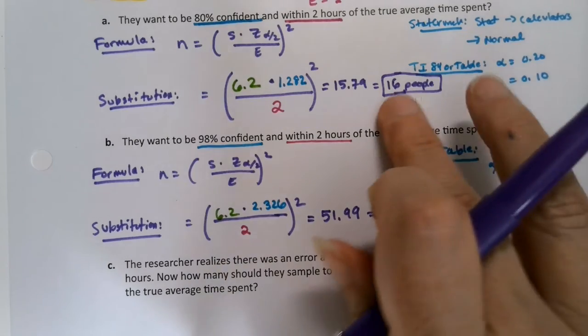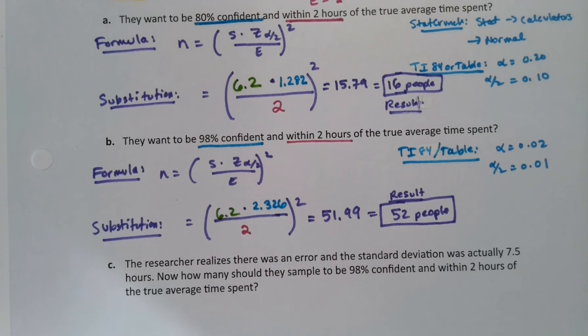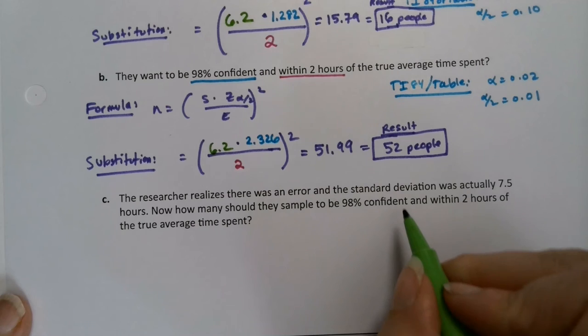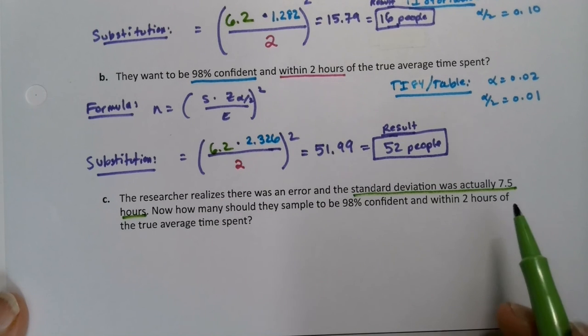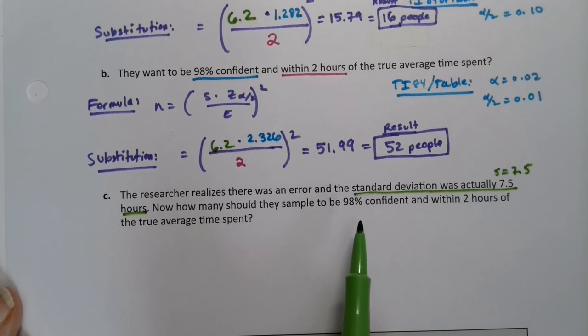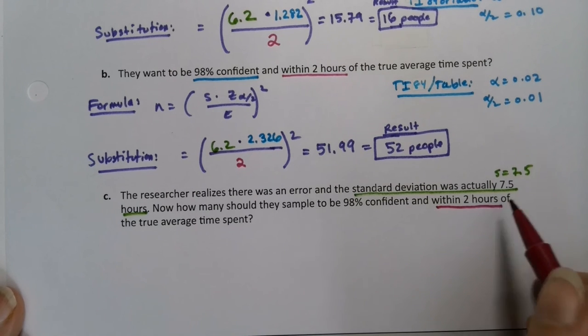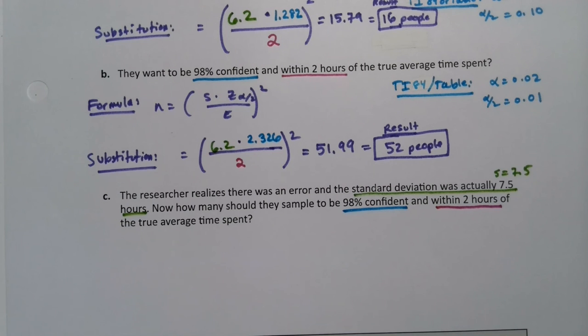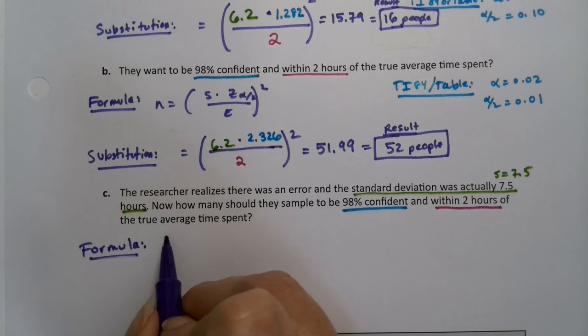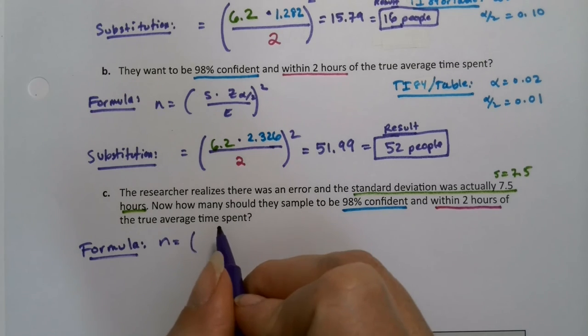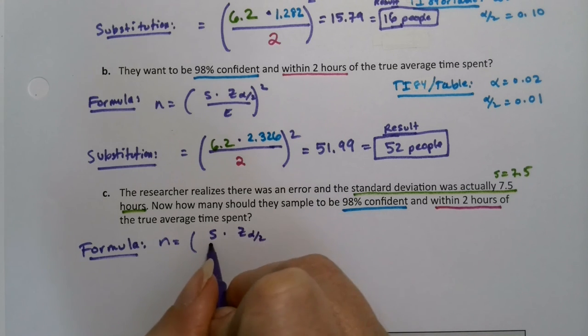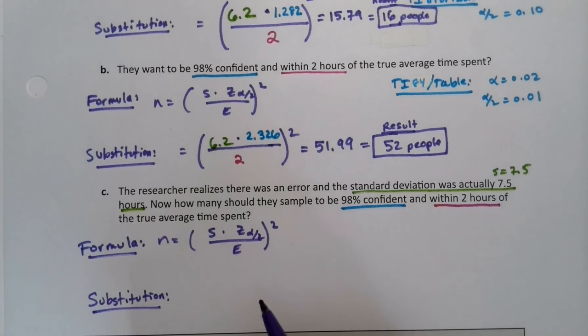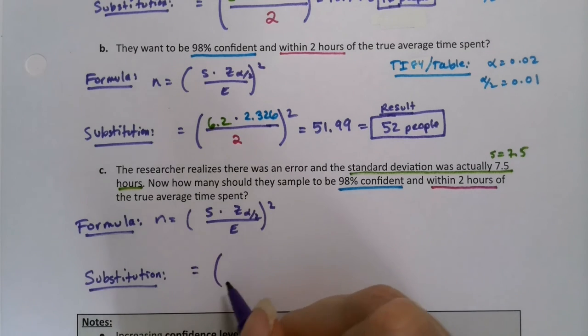Suppose the researcher realizes that the standard deviation was actually 7.5 hours. So S is 7.5, but we still want 98% and within two hours. So this piece is still within, that's our error. And the 98%. So I'm sticking with the 98% confidence that we had from part B. Now what happens? Well, the formula has not changed because we're still looking for the sample size needed to calculate a mean. So it's S times Z alpha over two over the error squared. Basically figuring out how many people do I need to contact or get the results from in order to estimate this mean with my 98% confidence level.